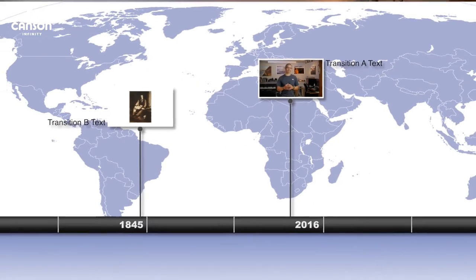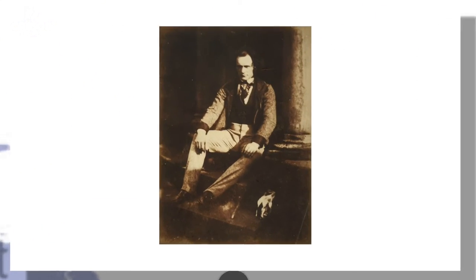Before we get started, I think it's worth adding some historical context to Canson's involvement in photographic paper, which goes all the way back to the invention of the photographic print in the early 1800s. The first two processes for making prints were the calotype,